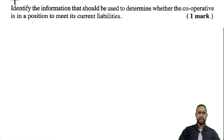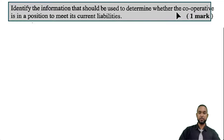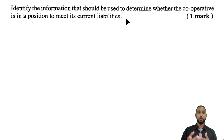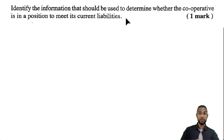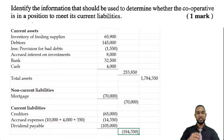There were a couple of other items. It said to identify the information that should be used to determine whether the cooperative is in a position to meet its current liabilities. I believe they are talking about liquidity, which is measured — as we saw in question 6 on this exact paper — by the current ratio. So you look at current assets relative to current liabilities. We have $253,850 of current assets and $184,350 of current liabilities, so we can look at liquidity by comparing current assets versus current liabilities.